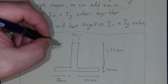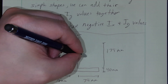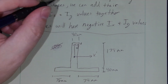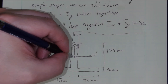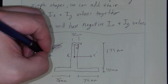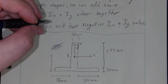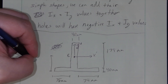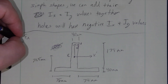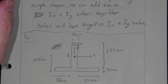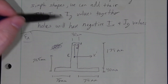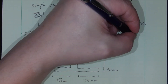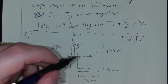Now if there is an axis X prime, Y prime right there about the centroid C, and from the bottom that centroid is 71.5 millimeters up — which we could verify using Chapter 9 composite body centroid principles — what we want to do is find the moment of inertia of this shape about this X prime axis.